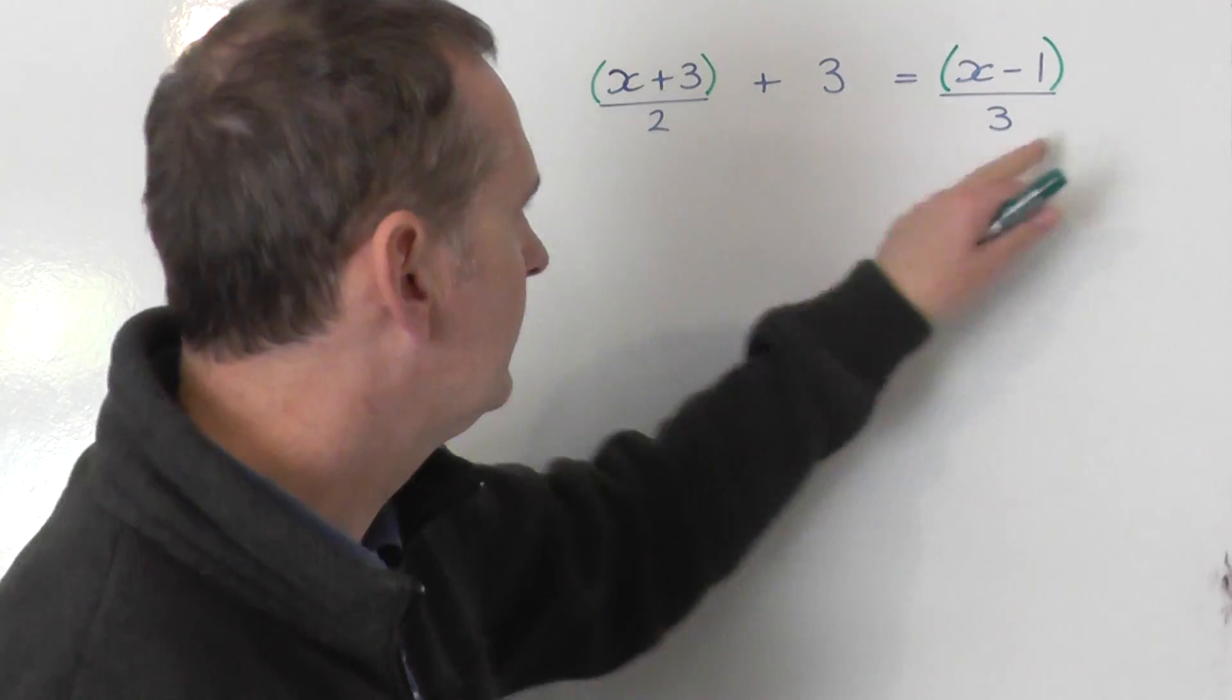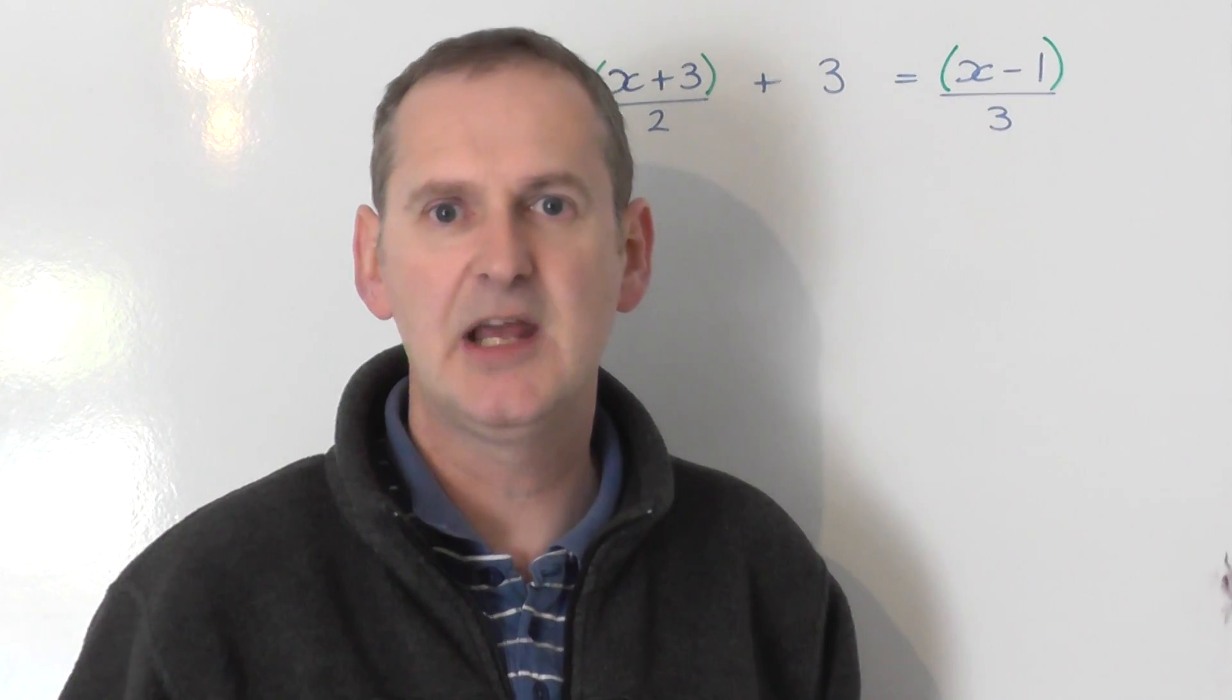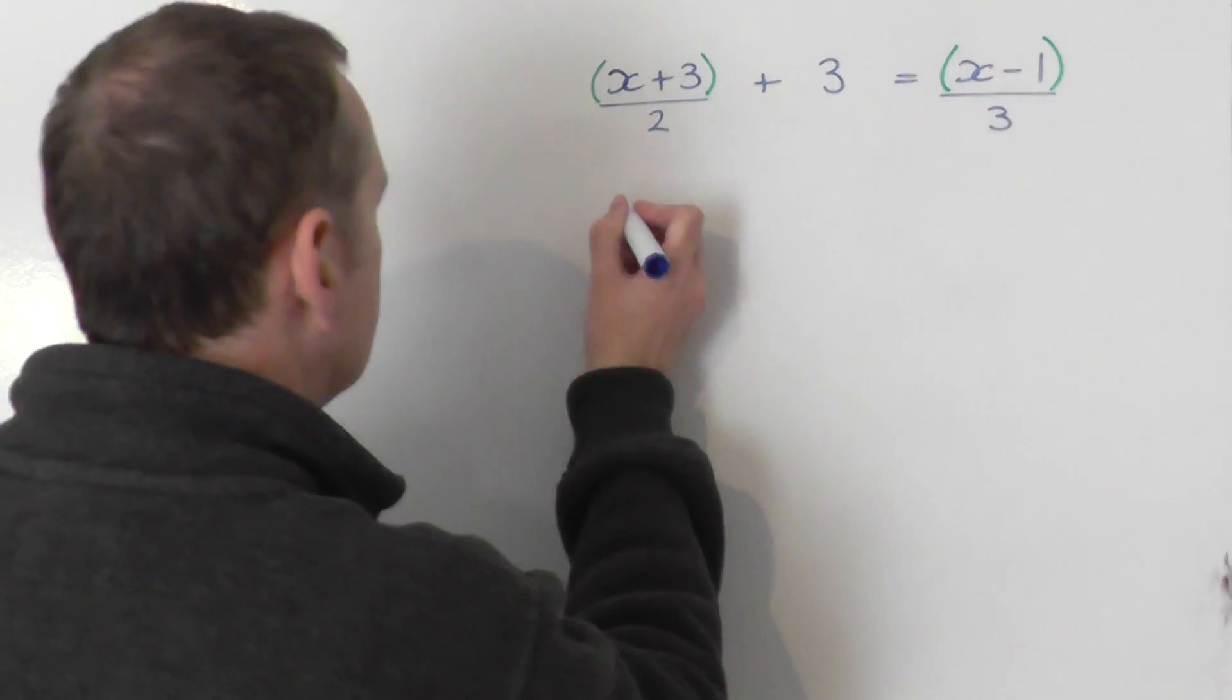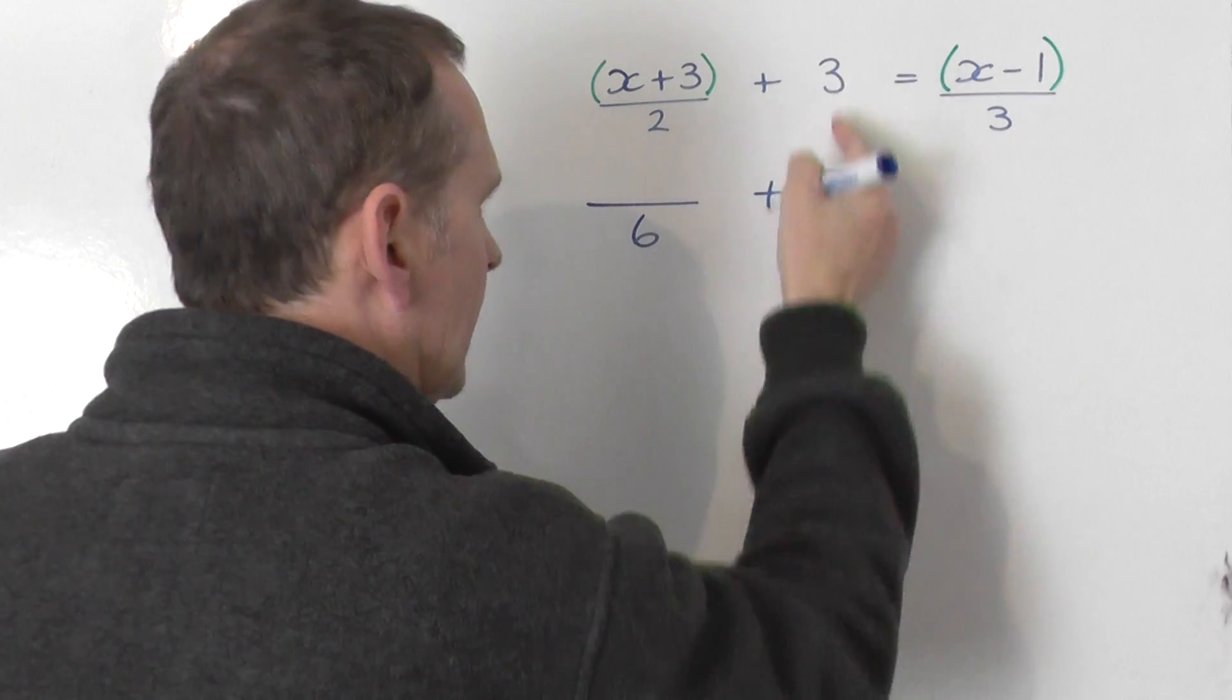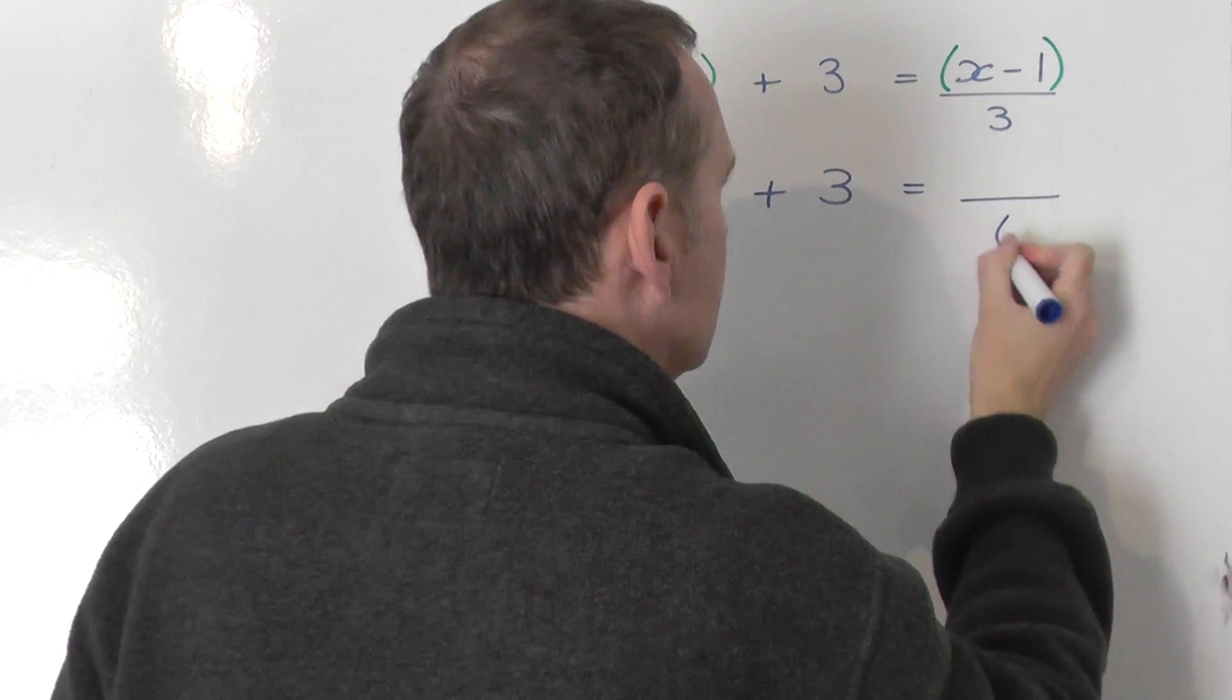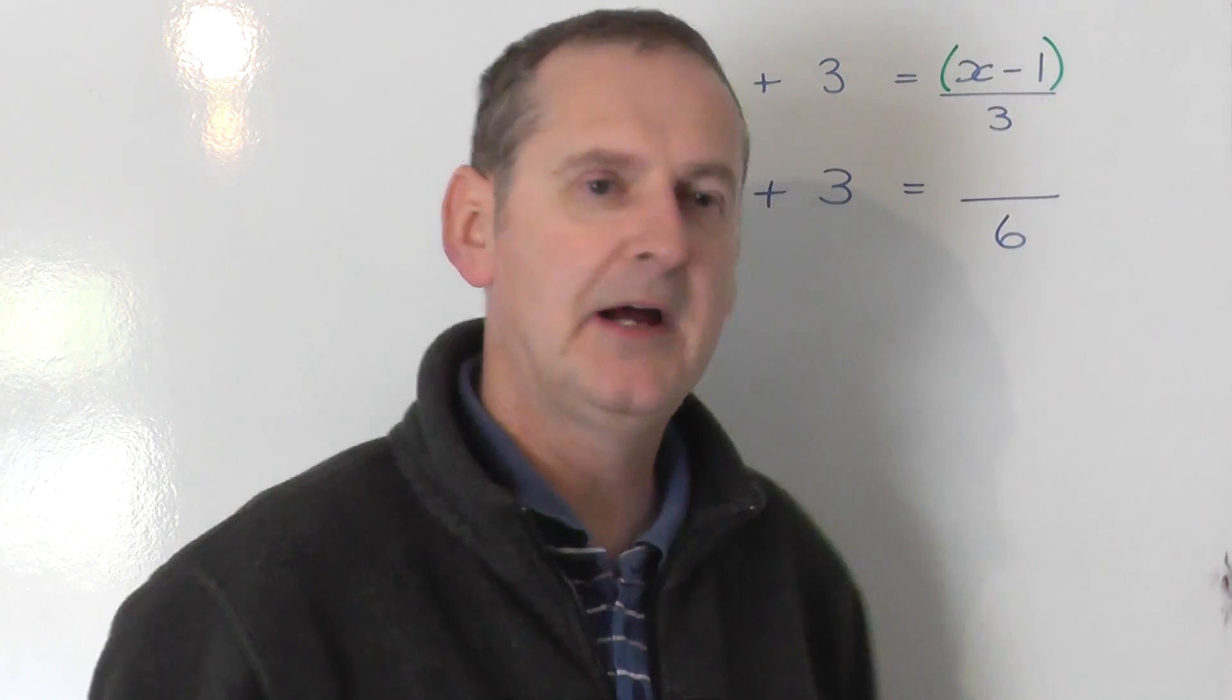They're different numbers on the bottom, 2 and 3. What I need to do is get both of those numbers to be identical numbers, using LCM work. The LCM of 2 and 3 is 6. So what I'm going to do is change both of these, leave the plus 3 alone, that's not a fraction, that's going to stay exactly the same. Change both of these bottom lines to the LCM number 6. So how do I go about doing this?